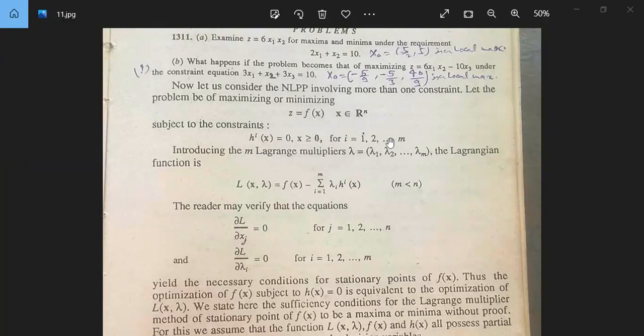Introducing the M Lagrangian multipliers, M constants then we will need M Lagrangian multipliers, lambda 1, lambda 2, up to lambda M. Then the Lagrangian function is L(x, lambda) equal to F(x) minus summation i equal to 1 to M lambda_i H_i(x). This is our Lagrangian function.